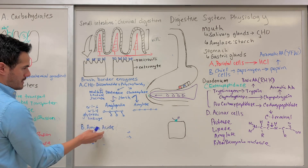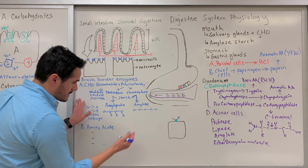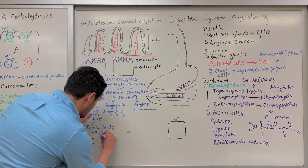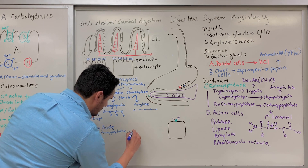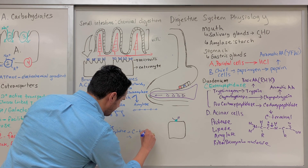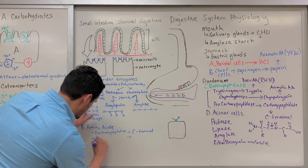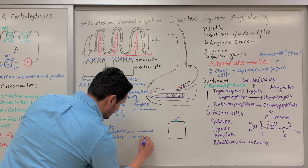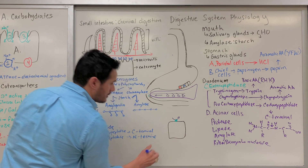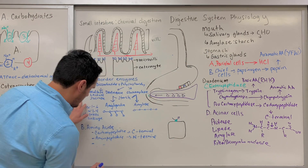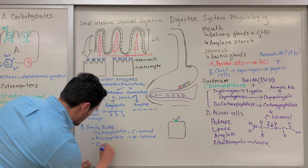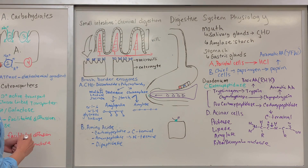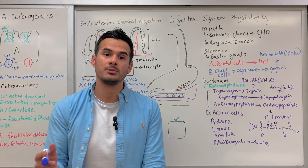Now let's move on to the amino acids. For the amino acids, we have carboxypeptidase, which cleaves peptides from the C-terminal. You also have aminopeptidase, which cleaves peptides from the N-terminal. And the last one is dipeptidase, which cleaves dipeptides. That's going to do it for this lecture, and in the next one we'll discuss absorption.